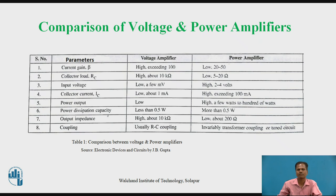Power dissipation capability: for a voltage amplifier it is less than 0.5 watt, and for a power amplifier it is more than 0.5 watt. Output impedance of a voltage amplifier is high, about 10 kilo ohm; for a power amplifier it is low, about 200 ohm. Regarding coupling — input and output coupling: for a voltage amplifier, generally RC coupling is used because of its small size, less space requirement, and low cost. Whereas for a power amplifier, transformer coupling is always used to couple the amplifier output signal to the output load.